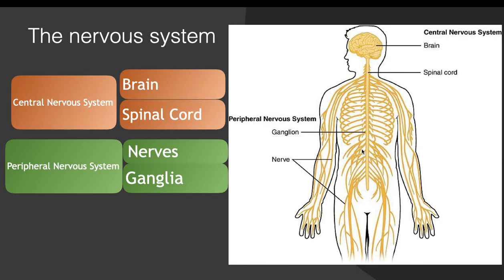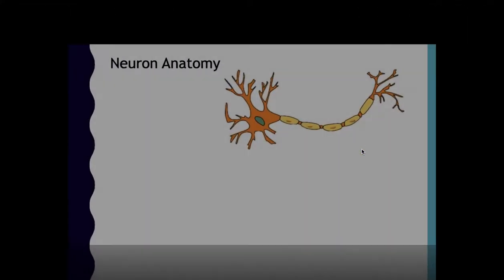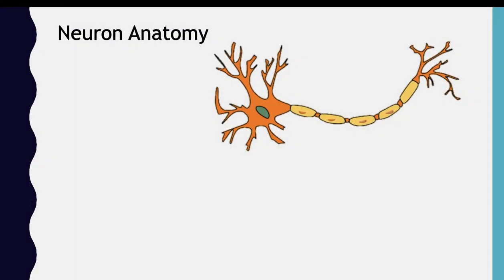Now let's talk about the building blocks of the nerves. This is what we call a neuron, and a neuron is a building block of a nerve. There are three parts of a neuron.